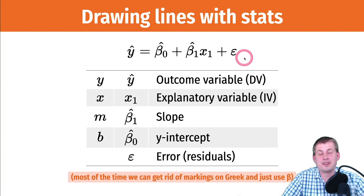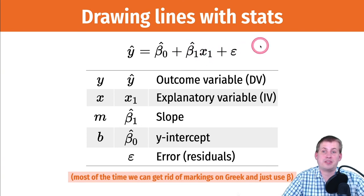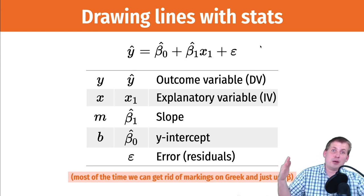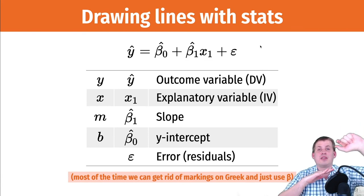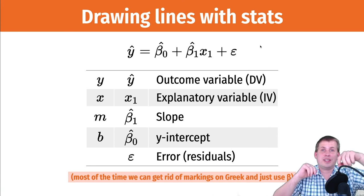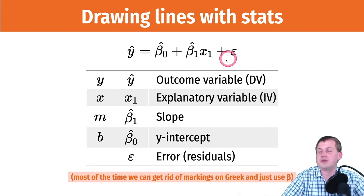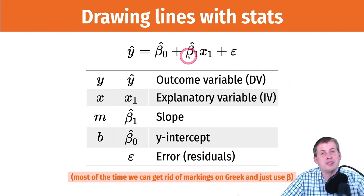The last piece is epsilon, which just means error — this is the residual stuff we can't measure. We're trying to predict y: some of y will be explained by x, and some will be explained by other stuff. Going back to the cookies example, that one person who ate five cookies had a lot of happiness — something else is explaining that, and we just say it's in epsilon.